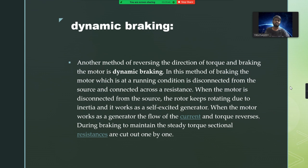The next one is dynamic braking — the last type in electrical braking systems. In this method of braking, the motor that is running is disconnected from the source and connected across a resistance. When the motor is disconnected from the source, the rotor keeps rotating due to inertia and it works as a self-excited generator. When the motor works as a generator, the flow of current and torque reverses during braking. To maintain the steady torque, sectional resistances are cut out one by one. We are reversing the direction of the torque and braking the motor by dynamic braking — disconnecting the supply of the motor and reconnecting to an external resistance.